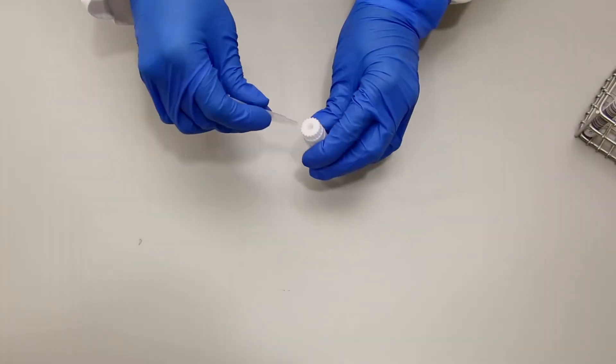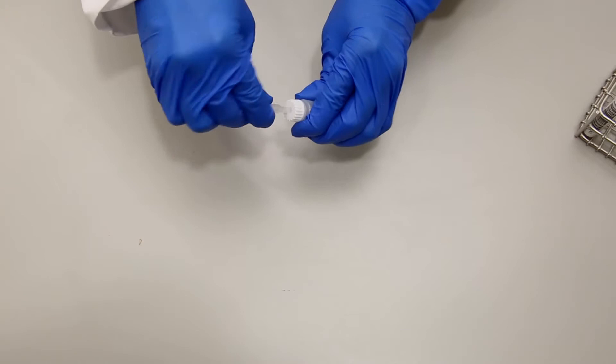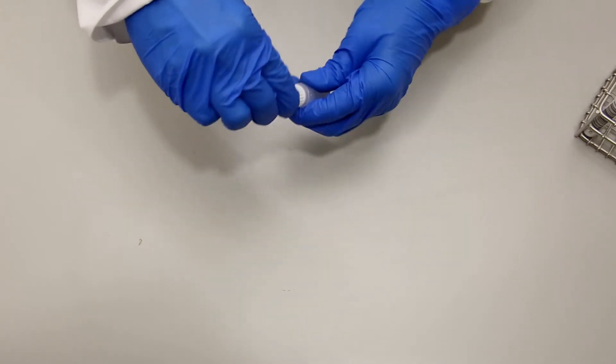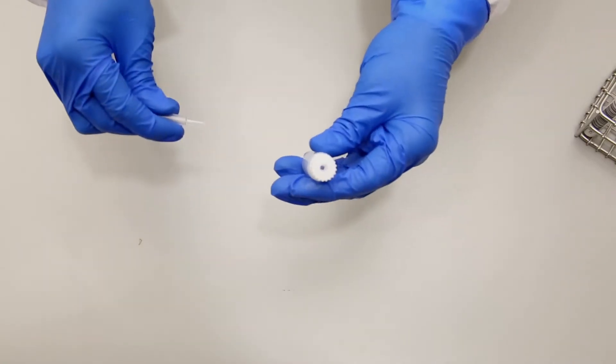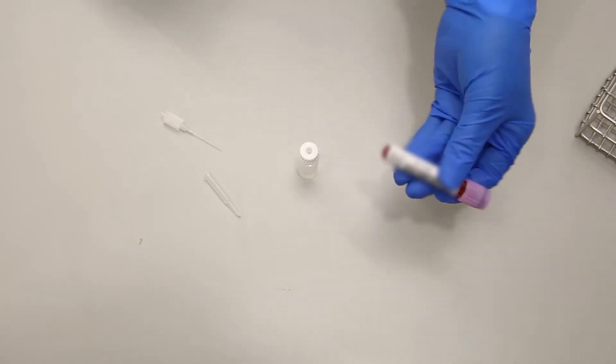There are several manufacturers of whole blood diluting systems used for manual white blood cell and platelet counts available. The system demonstrated in this video is the BMP LeukoCheck system.